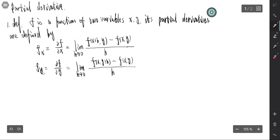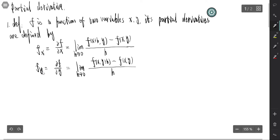By the definition, we know that there is no new method here, because we just keep one variable changing and other variables are fixed. So to compute the partial derivative, we just view the other variables as constants. Here we have some notation: f_x, sometimes written as ∂f/∂x, and sometimes written as f₁.